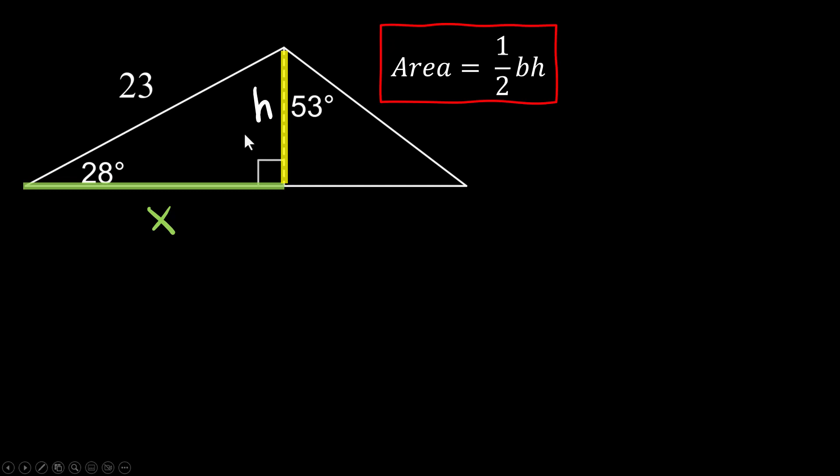We're going to find x first and then we'll find h. I am going to use trig so I need to find my trig tools. The x in relationship to the 28 degrees is the adjacent side. The 23 is the hypotenuse. So you've got to pick the right tool.